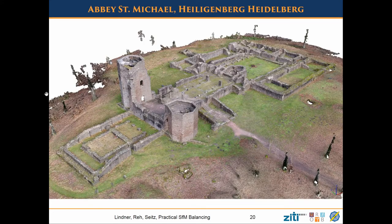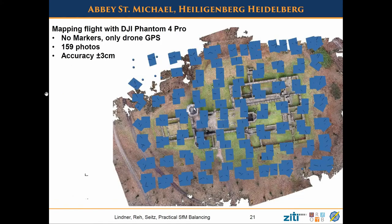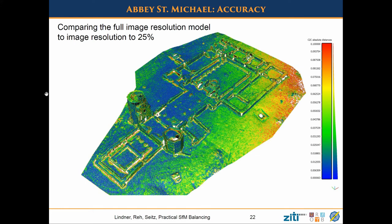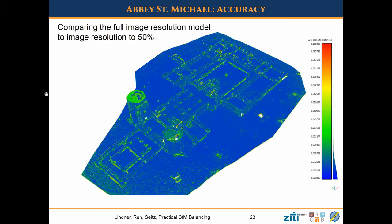We also had a quick real-world example: the remains of a monastery taken with copters — no markers, only GPS from the copter, which is not a very good GPS, with just a few pictures. You can see that we are accurate to about 3 centimeters. If you downscale to 25% you get a few more errors, but it's quite okay. Green is about 3 centimeters, and only locally are we worse than the actual reconstruction. It gets better of course with 50% downscaled images.